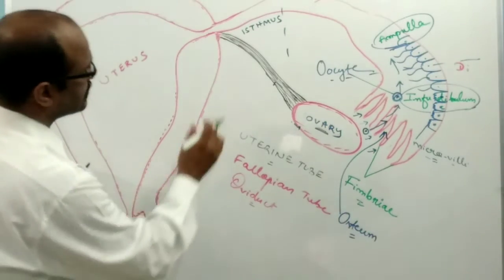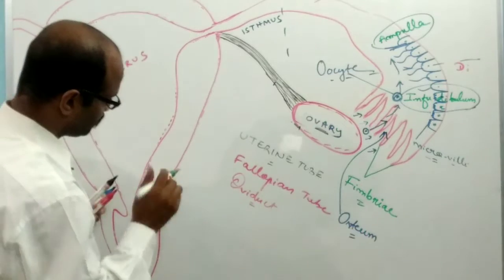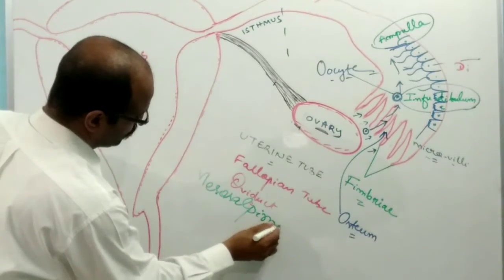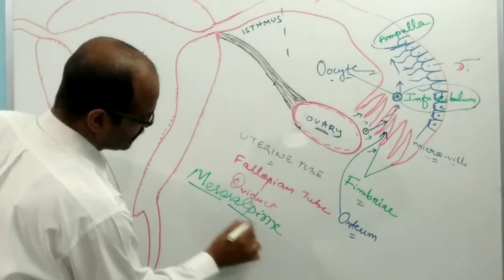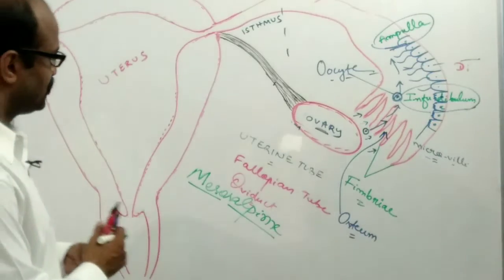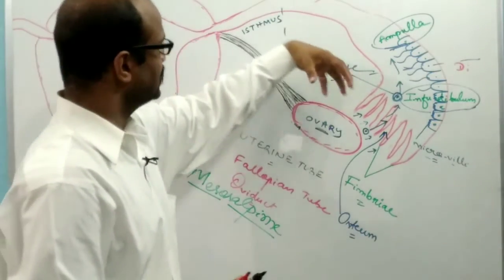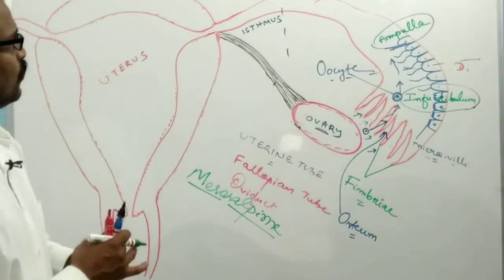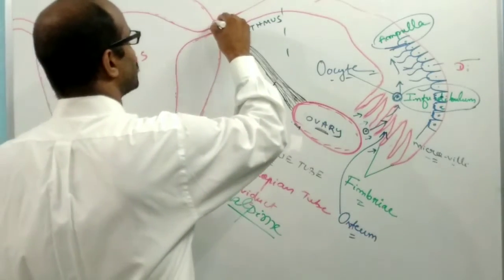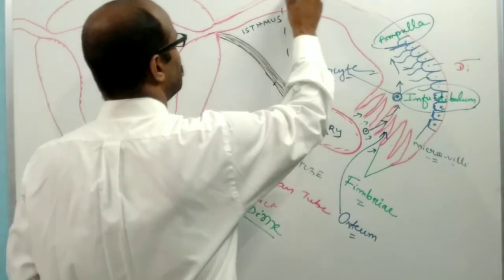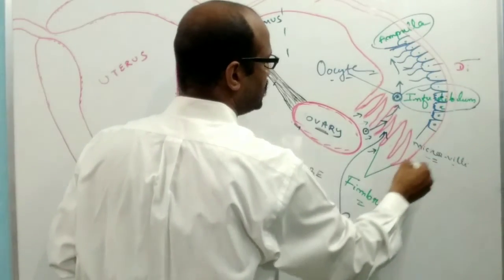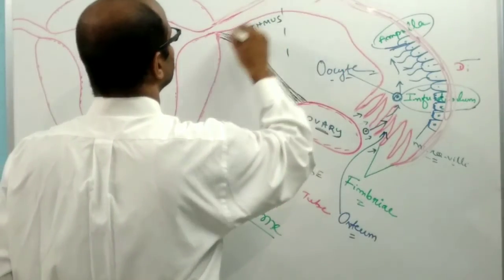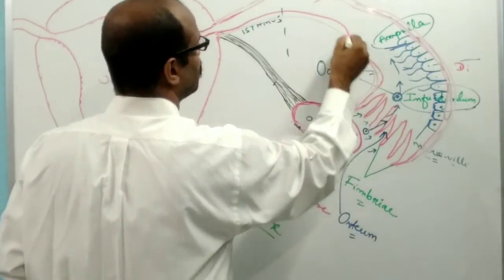These mesenteries, known as the mesosalpinx, keep the fallopian tube in position. The fallopian tube externally is lined by the peritoneal layers — it is covered by a peritoneal covering.